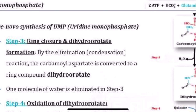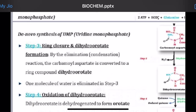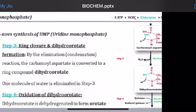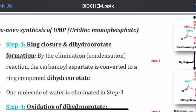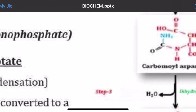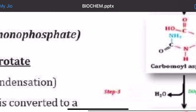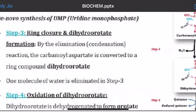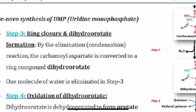That is step two. Now coming to step three, which is ring closure. This carbamoyl aspartate undergoes ring closure through removal of water — you can see NH2 attached and OH attached, so H2O will leave, NH will remain, and the ring will be closed.